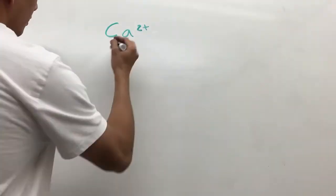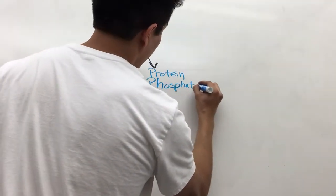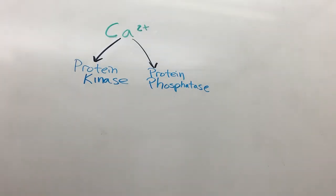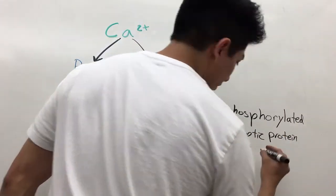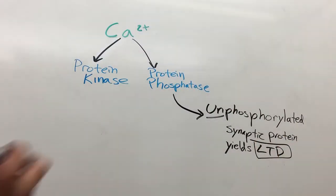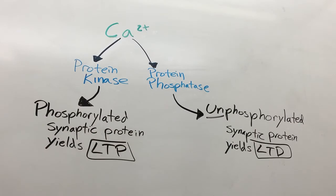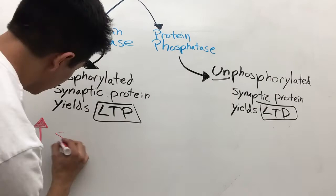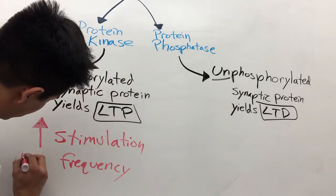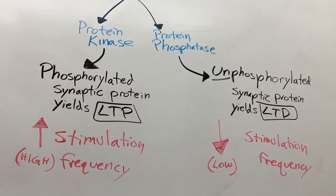Now we have an overall view of the different pathways that calcium can take depending on the frequency of stimulations we get in that neuronal synapse. Calcium acts on either protein kinase or protein phosphatase. The protein phosphatase will act with the unphosphorylated synaptic protein and yield LTD, while the protein kinase will deal with phosphorylated synaptic protein and yield LTP. LTP happens when we get higher stimulation frequency, and LTD happens when we get lower stimulation frequency.